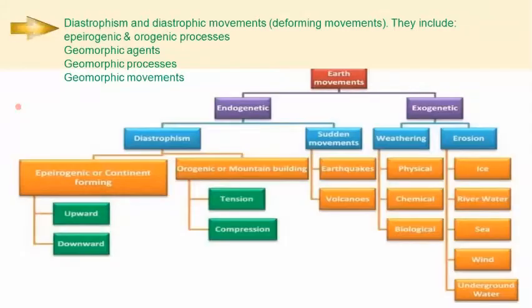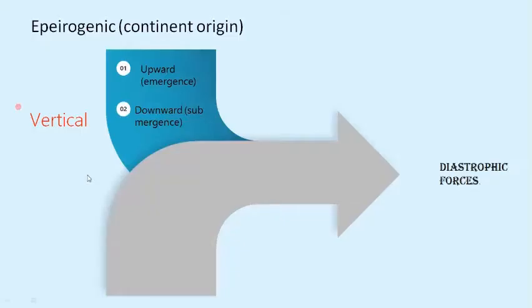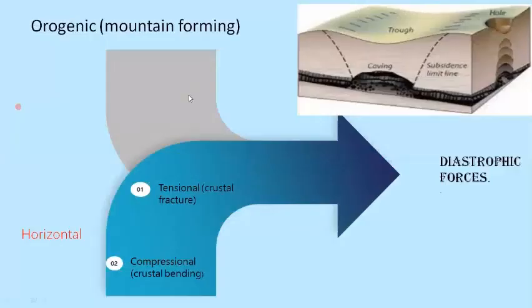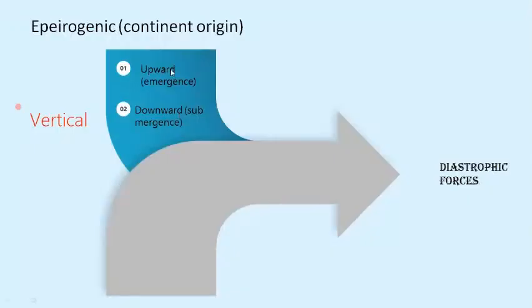Today we will be studying about diastrophism, epeirogenic and orogenic movements. In epeirogenic movements, there are two types: one is the upward movement and one is the downward. Epeirogenic movement involves moving up — which is emergence — and moving down — which is submergence.